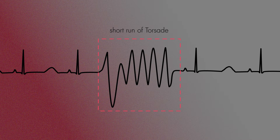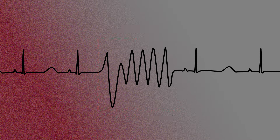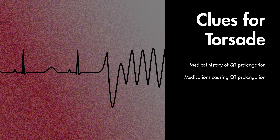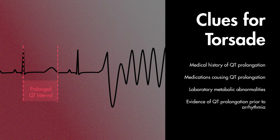You could also see short runs of torsades which self-resolve. Sometimes the run is so short-lived that the characteristic twisting morphology is not so obvious, making the diagnosis a little tricky. In these cases, you'll rely on some subtle clues: a medical history of congenital QT prolongation, a patient's medication list with QT prolonging medications, lab results showing specific electrolyte disorders, or a rhythm strip showing a prolonged QT interval just prior to the run of ventricular tachycardia.